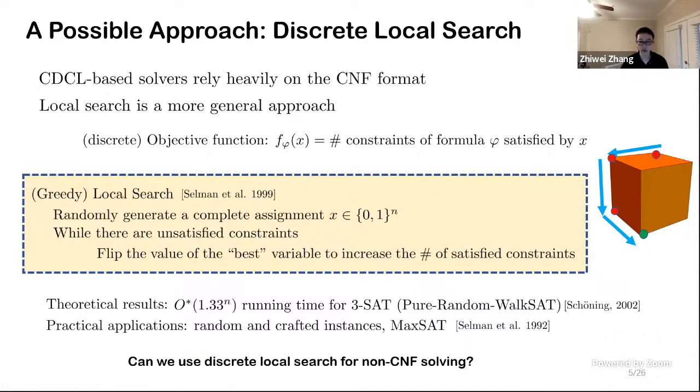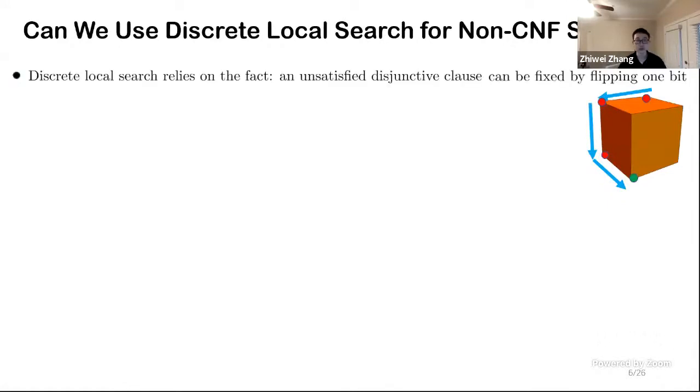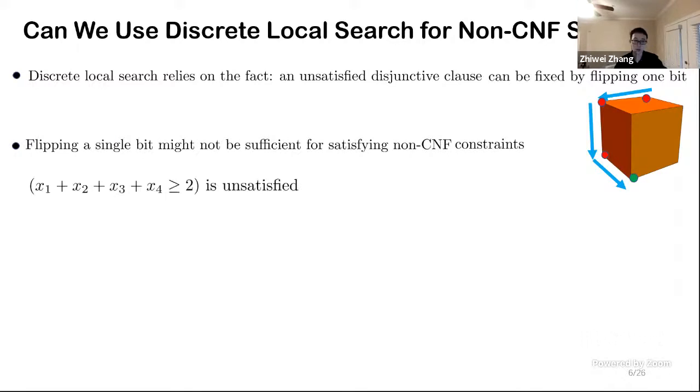So we want to ask, can we use discrete local search for non-CNF solving? Let's see what happens. Remember that discrete local search relies on some properties of CNF, which is an unsatisfied clause can always be fixed by flipping just one variable. But does this property also hold if we want to solve non-CNF constraints? Probably not.